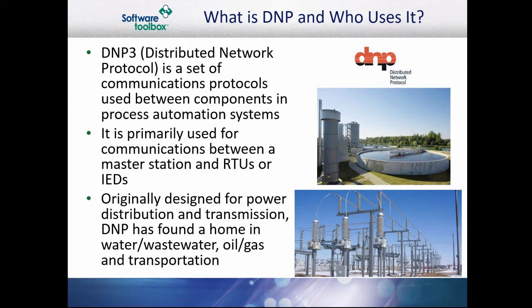GE Harris later turned over ownership and responsibility for further development and evolution to the DNP3 Users Group. DNP3 has become widely used in industries such as water/wastewater, transportation, and oil and gas. These industries can have geographically dispersed field RTUs over paid transmission media such as cellular radio, so keeping costs down on these networks is critical. DNP3 is a very efficient protocol in bandwidth usage, which is why it has found a home in these industries.